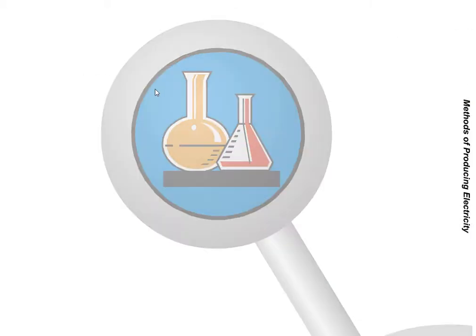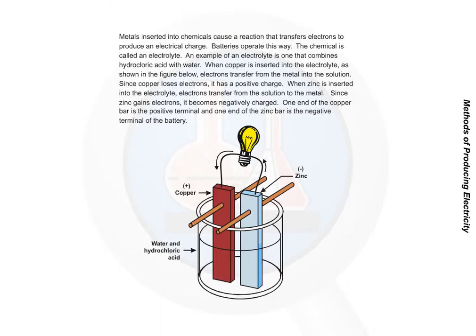Chemical. Metals inserted into chemicals cause a reaction that transfers electrons to produce an electrical charge. Batteries operate this way. The chemical is called an electrolyte. An example of an electrolyte is one that combines hydrochloric acid with water. When copper is inserted into the electrolyte, as shown here, electrons transfer from the metal into the solution.